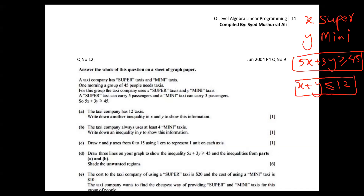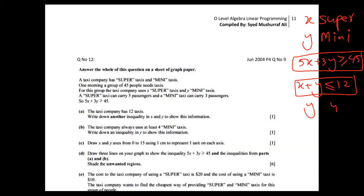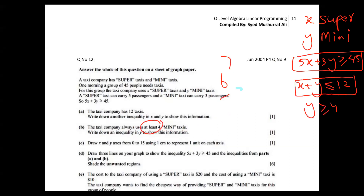Now part B: the taxi company always has at least four mini taxis. Mini stands for Y, so I write Y. The number is four. 'At least' means four, five, six, seven, and higher — four is included. So the inequality is Y greater than or equal to four. I hope this point is 100% clear.